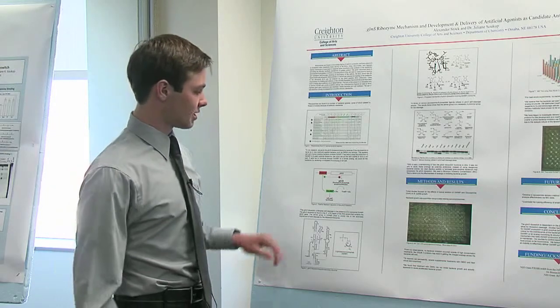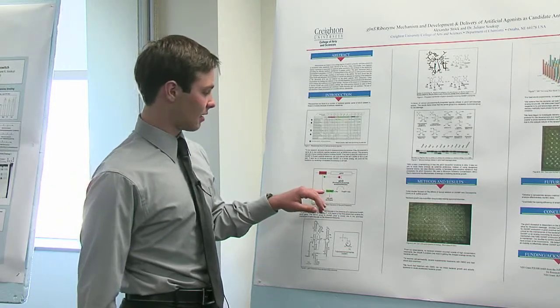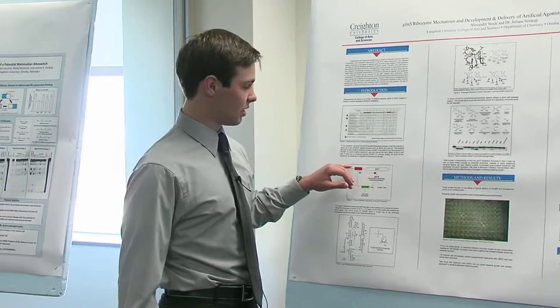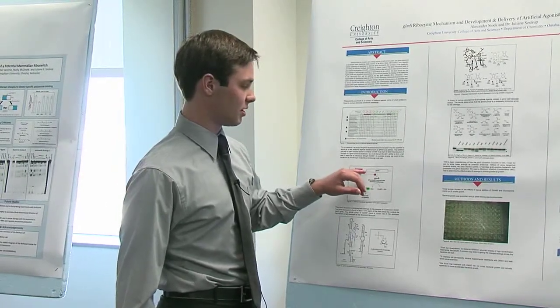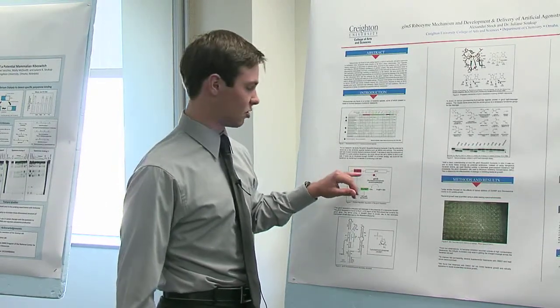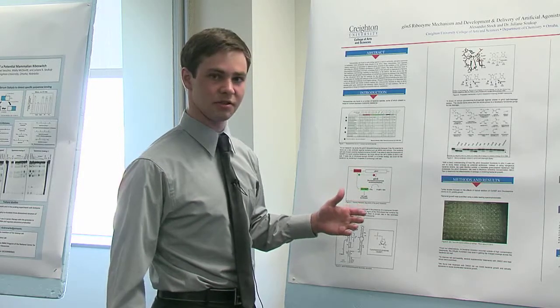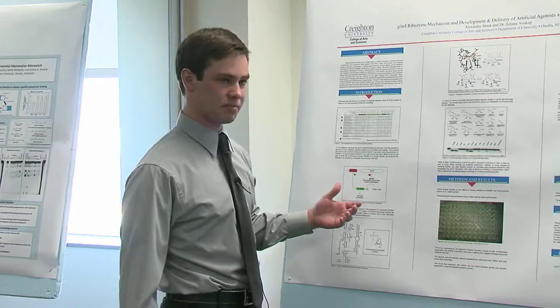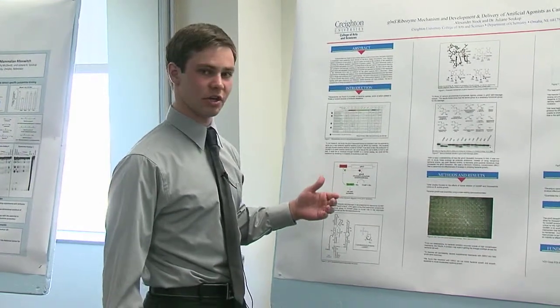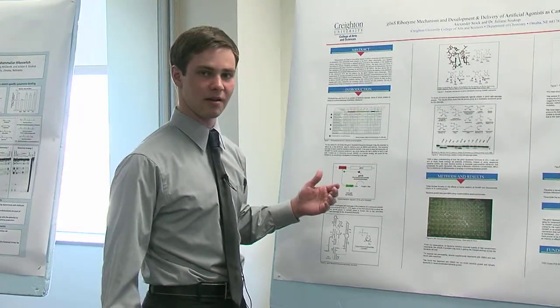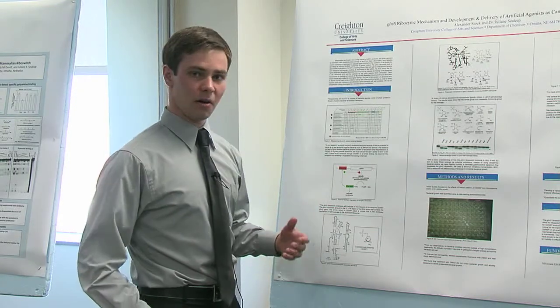So what GLN6P does is it cleaves the riboswitch, and it turns off expression of the GLMS messenger RNA, which actually creates more GLN6P. So when we have an upregulation in GLN6P, we cleave the riboswitch, and we have less GLN6P being made.